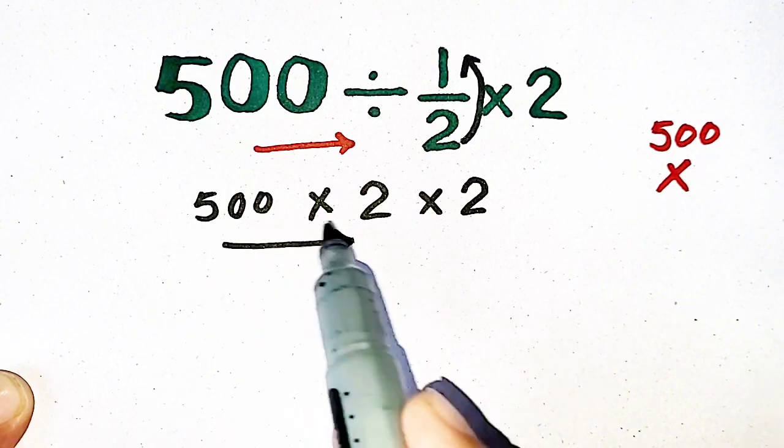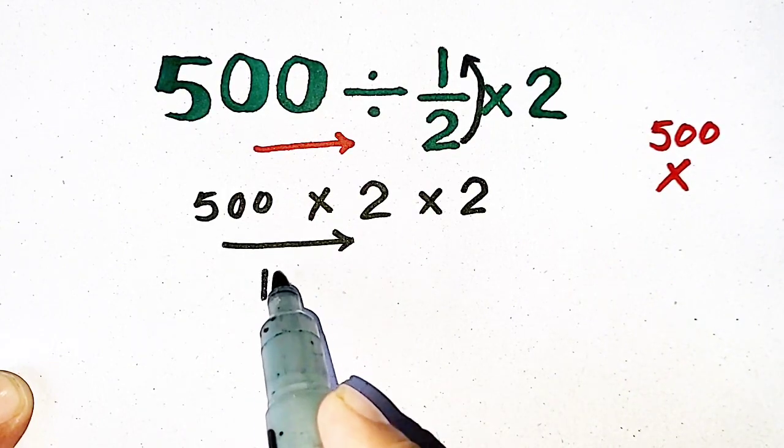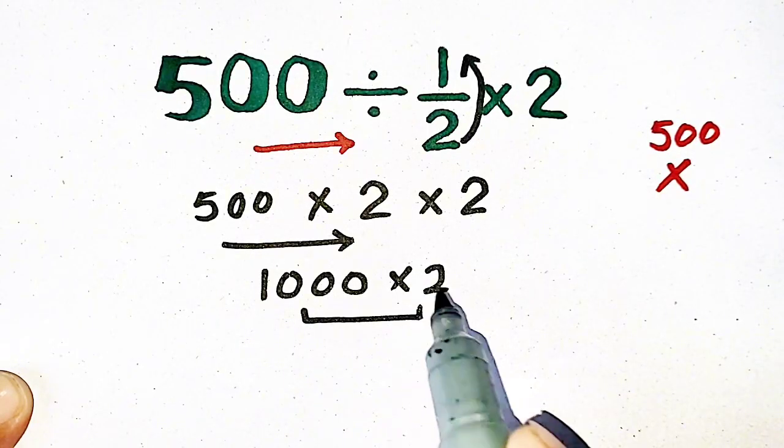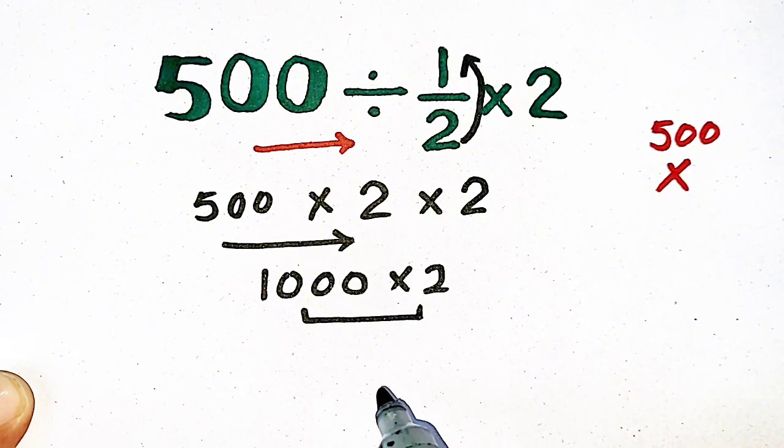500 times 2 is 1000, times 2, and when we multiply these two numbers...